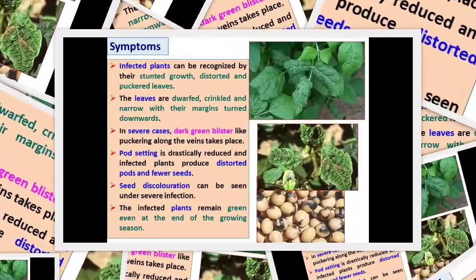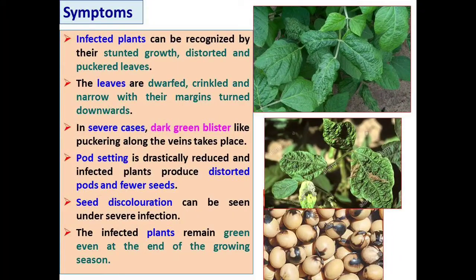Here you can see the symptoms of this Soybean Mosaic Virus. You can easily identify the infected plant by the symptoms of stunted growth, distorted and puckered leaves. The leaves are dwarf, crinkled and narrow with their margins turned downward. In the second image you can see the severe infection showing dark green blister-like symptoms occurring along the vein, which is a particular mark of identification for Soybean Mosaic Virus.